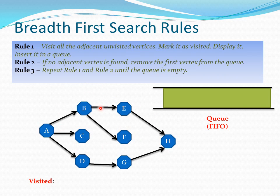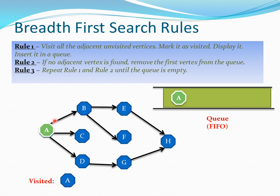Now let us apply these three rules on this animation and visualize how it behaves. We have one graph and one queue. The queue is a first-in, first-out data structure. First, let us choose a starting vertex where we can start our search or traversal. We chose vertex A as our starting vertex, so we insert it into the queue and mark it as visited. Rule one says visit all the adjacent unvisited vertices.